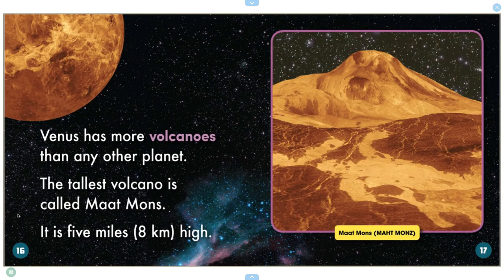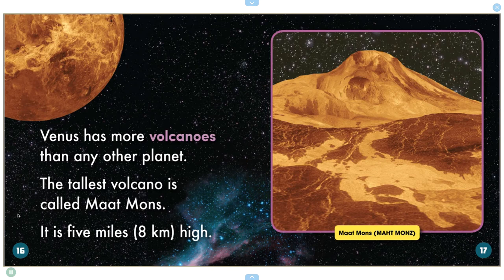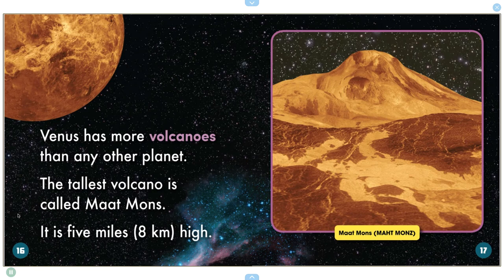Venus has more volcanoes than any other planet. The tallest volcano is called Mat-Mons. It is 5 miles, 8 kilometers high.